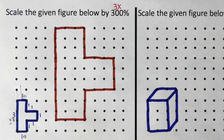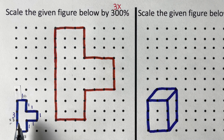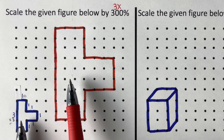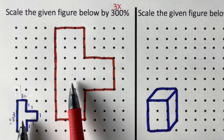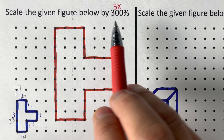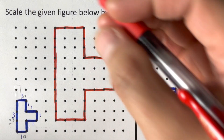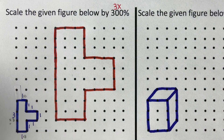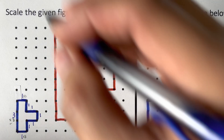This is the original picture and this is the picture that is three times bigger than the original. We call this three our scale factor.